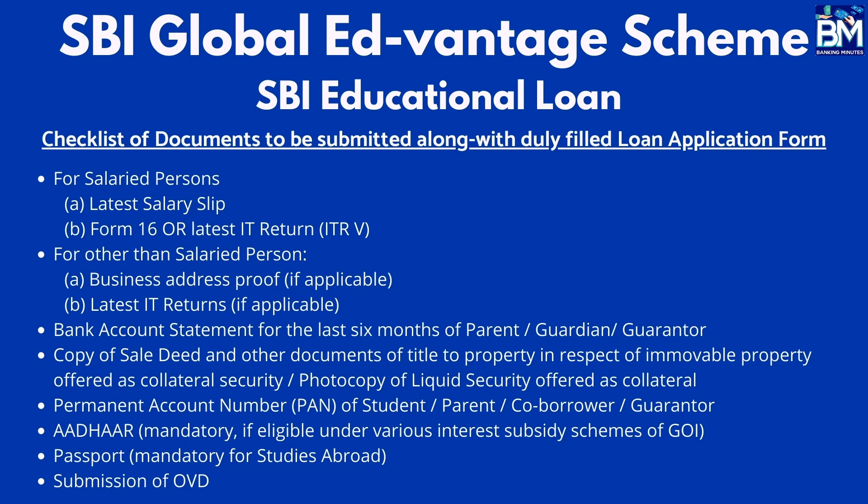If the co-applicant or guardian is a salaried person, provide salary slips for the last 6 months. If they have a business, provide address proof for the office and business registration documents. Also submit the latest IT returns copy and bank account statement of the parent or guardian for the last 6 months. PAN card and Aadhaar card documents for both student and parent should be submitted as applicable. If you have any existing loans, relevant loan documents should also be submitted.